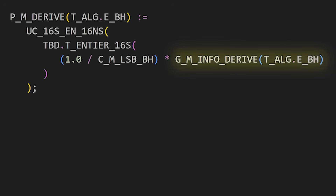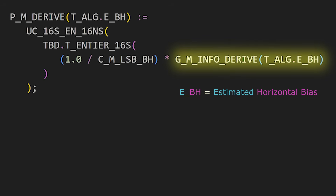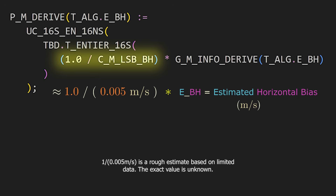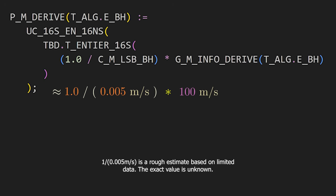In the code, there was a reading of the rocket's horizontal bias velocity — a small correction value applied to the rocket's horizontal velocity measurement. The raw bias velocity, measured in meters per second, was being multiplied by a constant factor, likely something like 1 over 0.005 meters per second, to translate the reading into a normalized form. For example, a velocity reading of 100 meters per second would have been translated to something like 20,000 normalized units.